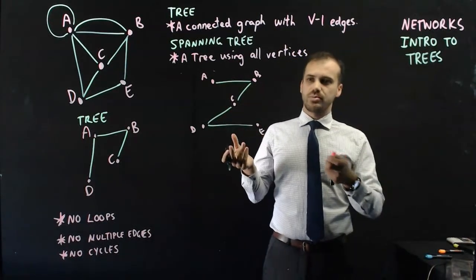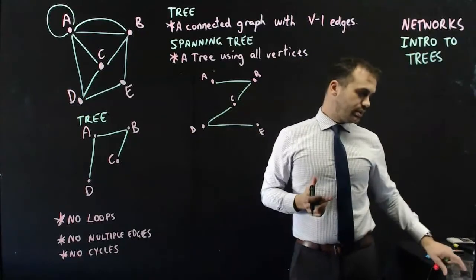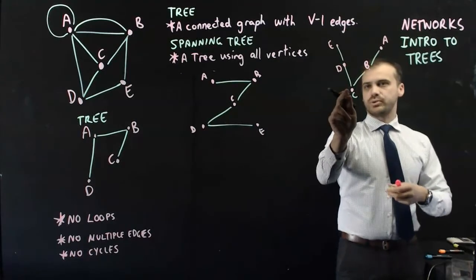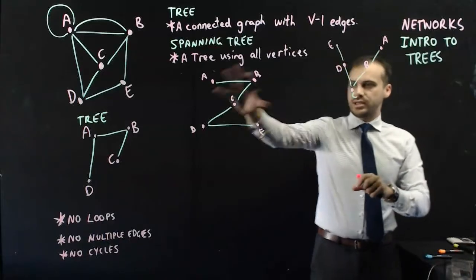Now, you might be wondering why it's called a spanning tree. Because you can draw this and it kind of ends up looking like a tree. You can see it's a tree that starts at point C and it splits off into D and B and splits off into E and A.